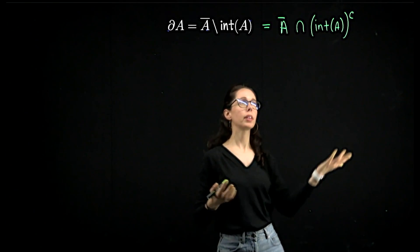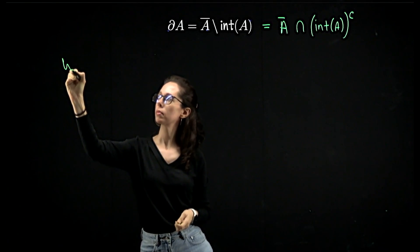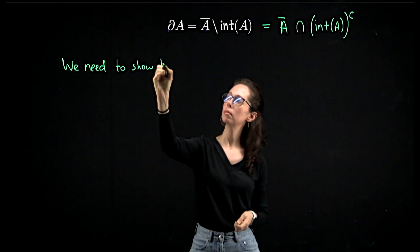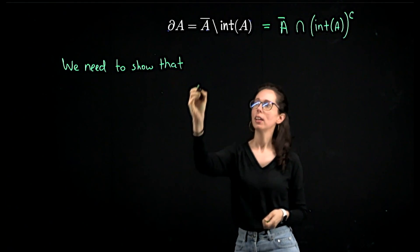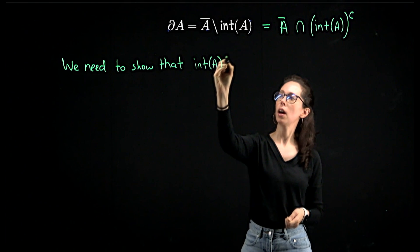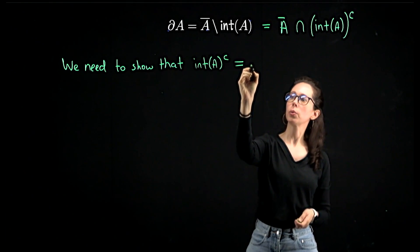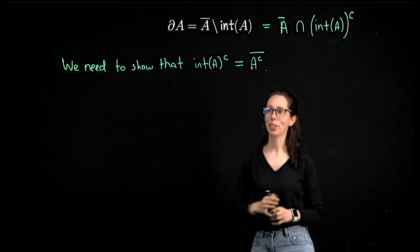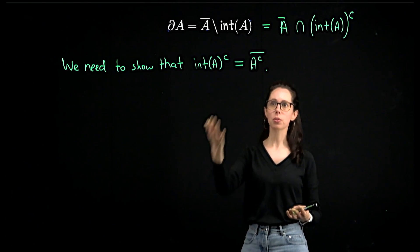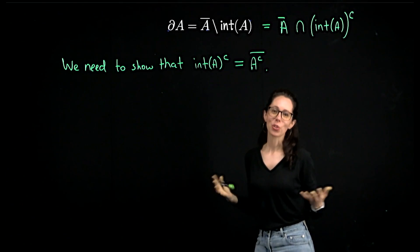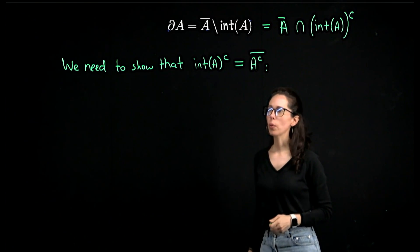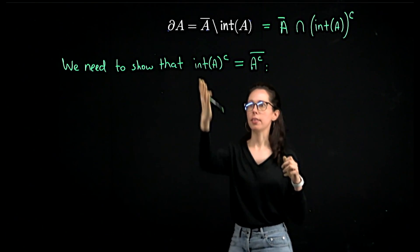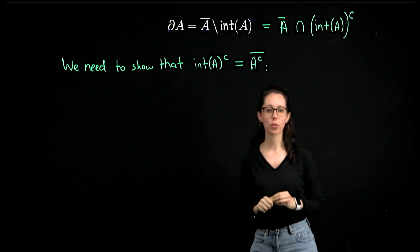So it suffices to show that the complement of the interior of A equals the closure of A complement. Both are closed sets: the interior of A is open, so its complement is closed, and the closure of A complement is closed. So it has a chance of being true — and it turns out it is. This is going to be a set containment argument: a point in one set must be in the other and vice versa. We can actually do both directions at the same time.